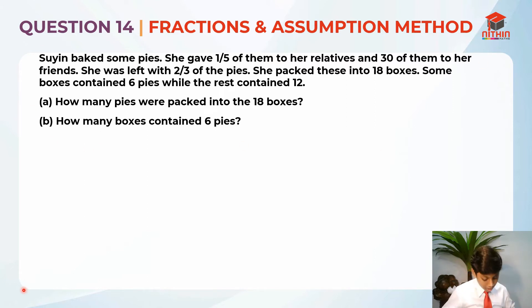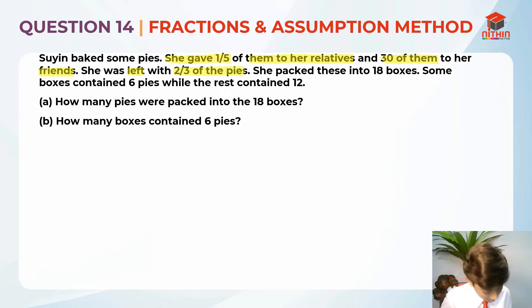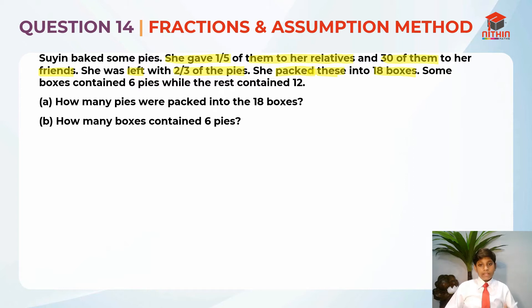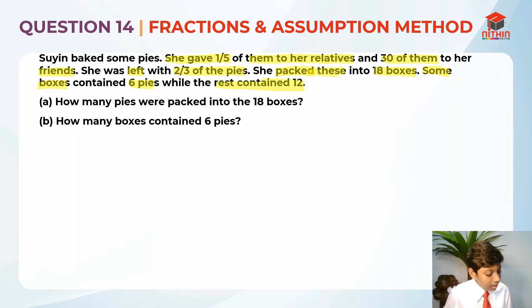Now that we've read the question, let's highlight the key information. Su Yun baked some pies. She gave one-fifth of them to her relatives and 30 of them to her friends. She was left with two-thirds of the pies. She packed these into 18 boxes. For part A, they're asking us how many pies were packed into the 18 boxes.